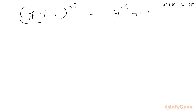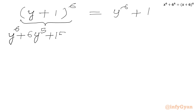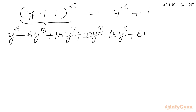We know the expansion coefficients using Pascal's triangle. For power 6 the coefficients are 1, 6, 15, 20, 15, 6, 1. So we write: y power 6 plus 6y power 5 plus 15y power 4 plus 20y cubed plus 15y squared plus 6y plus 1. On the RHS we have y power 6 plus 1.